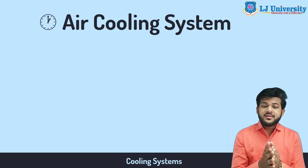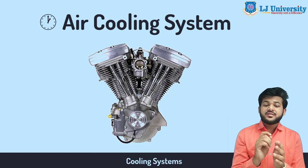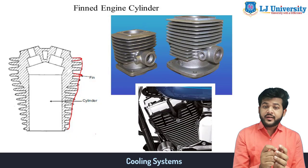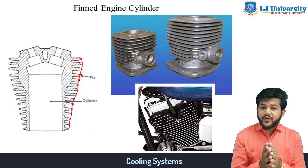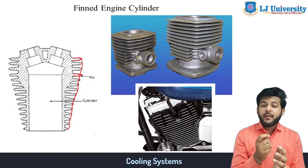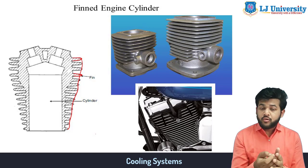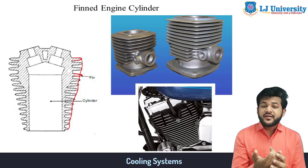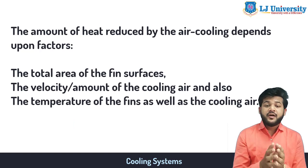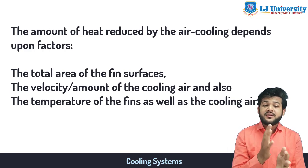The air cooling system is mostly found in older cars and two-wheelers. In an air-cooled system, the engine block is covered by aluminum fins that conduct heat away from the cylinder. A powerful fan forces air over these fins, cooling the engine by transferring heat to the air. The amount of heat reduced depends on factors such as the total area of the fin surface, the velocity of cooling air, and the temperature of both the fins and the cooling air.